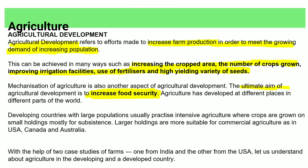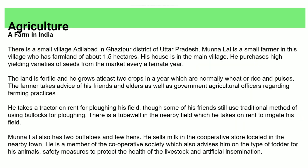Agriculture has seen a lot of development in developing countries as well as in the US and Australia. In India, there are agricultural facilities. Munna Lal is a small farmer in Alidabad, Ghazipur, Uttar Pradesh, who farms about 1.5 hectares. He purchased HYV (High Yield Variety) seeds. His land is fertile and he grows at least two crops a year.